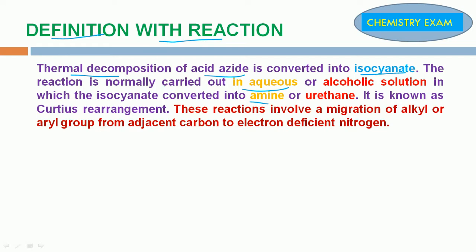This isocyanate is converted into Urethane in alcoholic solution. It is known as Curtius Rearrangement by the loss of one carbon group. These reactions involve a migration of alkyl or aryl group from adjacent carbon to electron deficient nitrogen.